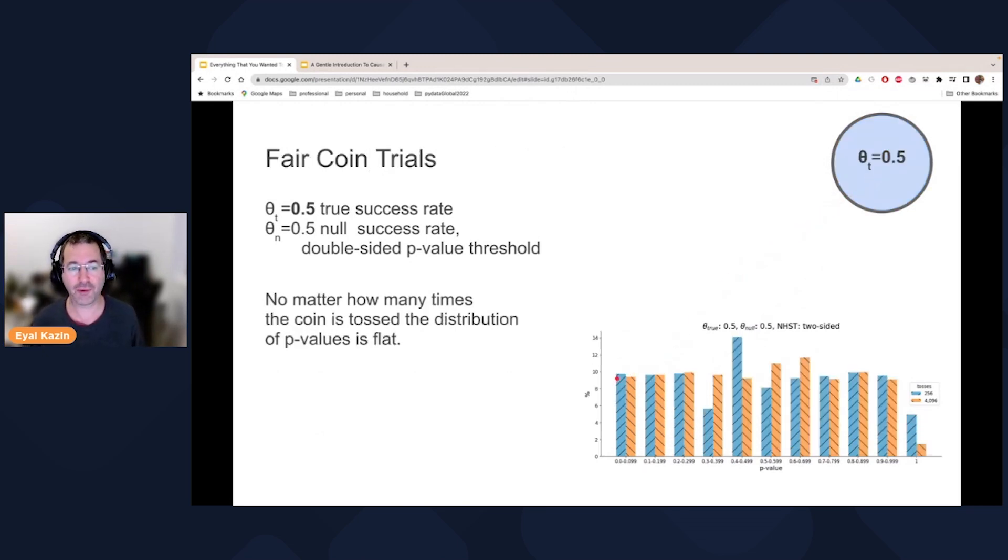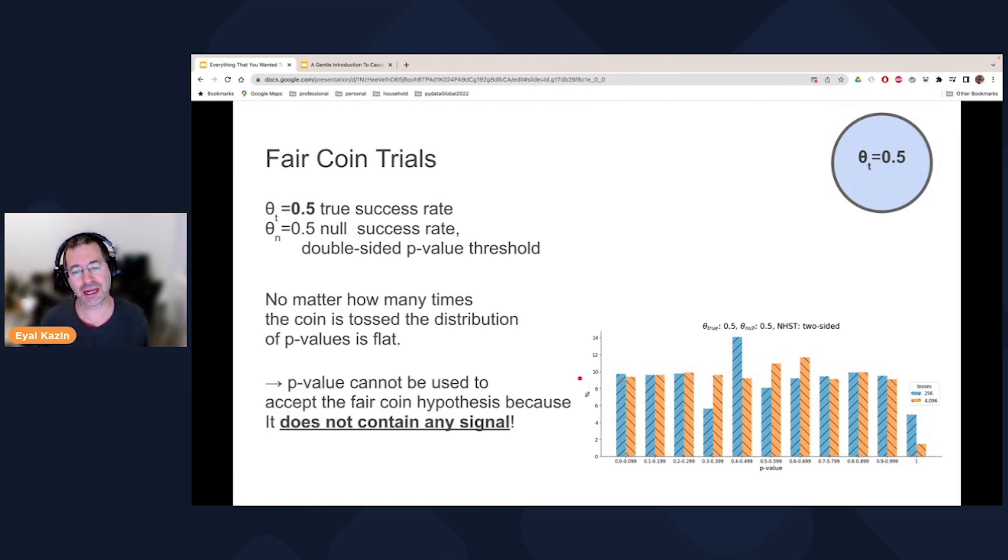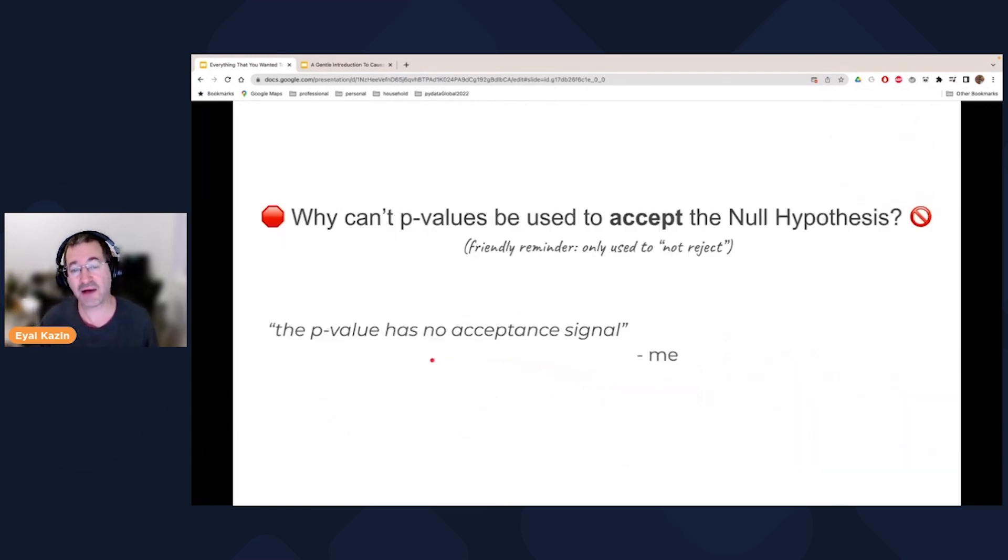But what happens if the underlying ground truth is a fair coin? Well, the interesting thing in a fair coin is that we get a flat distribution, there's no way to distinguish between 10% and 90% in terms of which way is it going. And so I thought that the semi satisfactory answer that I got before, one can even make a stronger statement in which the p values have no acceptance signal at all. And so I thought that's pretty interesting and worth sharing. I call it a semi satisfactory answer because it's very anecdotal using simulations. I tested only for binomial distributions, but I'm sure that there is a mathematical solution somewhere.